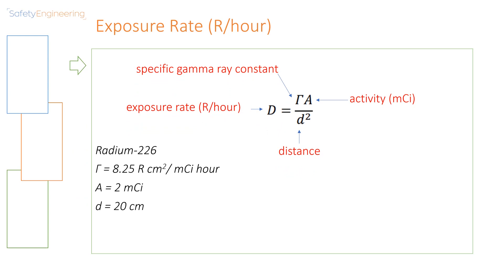Now given that we have a source of radium-226, and the specific gamma ray constant is 8.25 Roentgen centimeters squared per millicurie hour, the activity is 2 millicuries, and the distance is 20 centimeters. Putting in these values would give us an exposure rate in Roentgen per hour of 0.04.